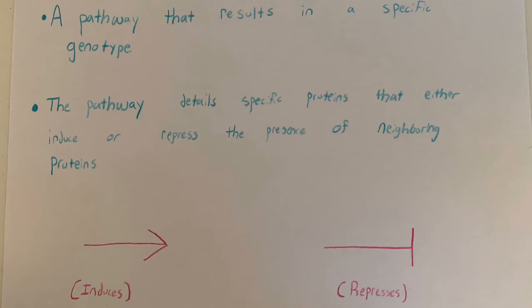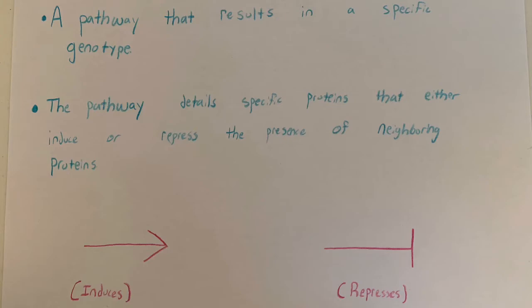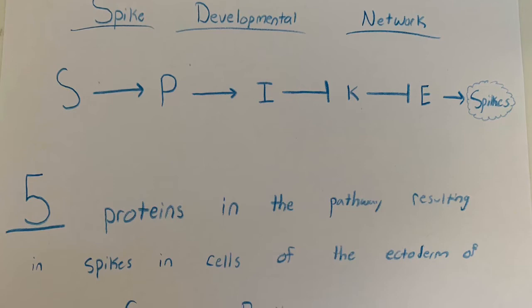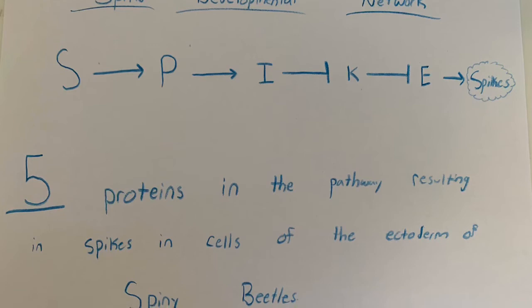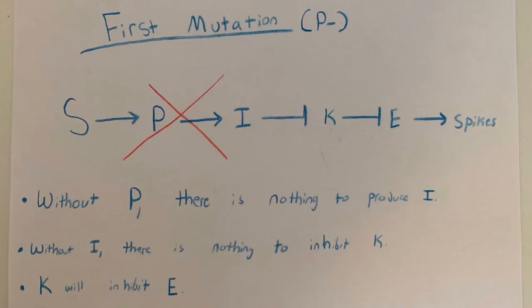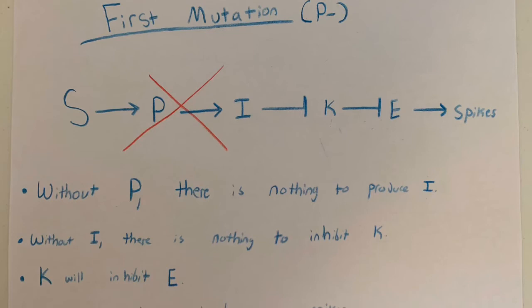When you see an arrow, that means it induces them, and when you see a line with a flat end, it means it represses them. Here is the spike developmental network. As you can see, there are five proteins involved, resulting in spikes in the cells of the ectoderm of spiny beetles. We are now going to go over four different possible mutations that could lead to either spikes being created or spikes not being created.